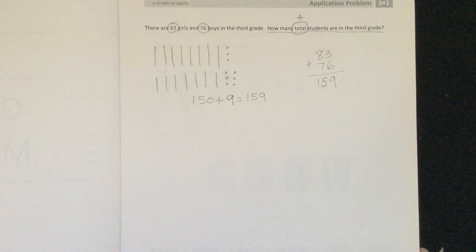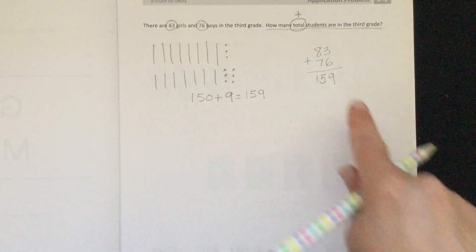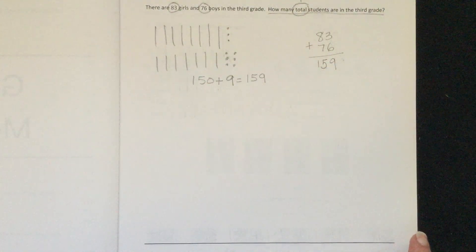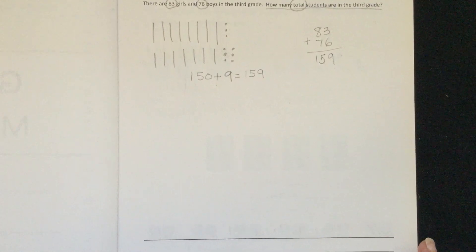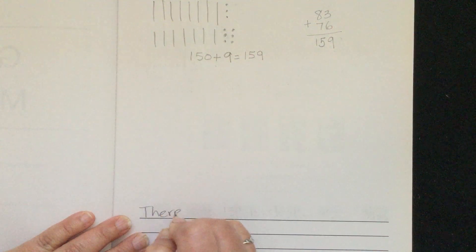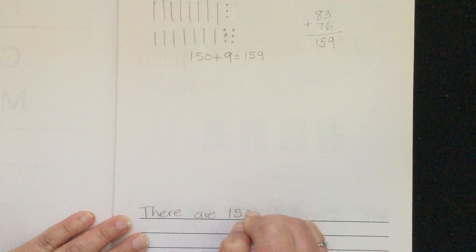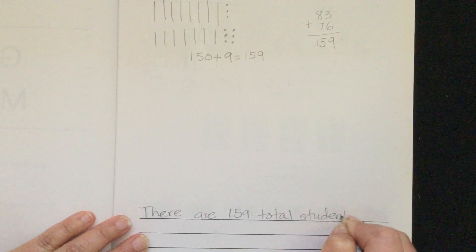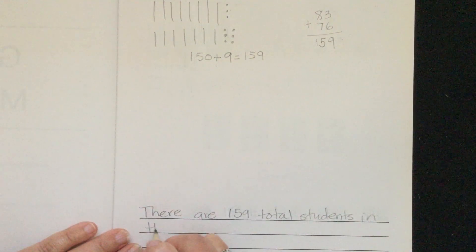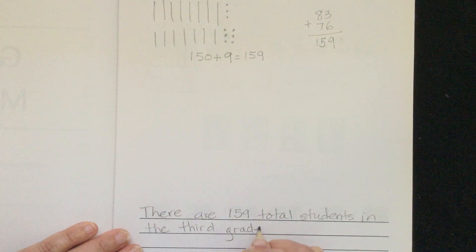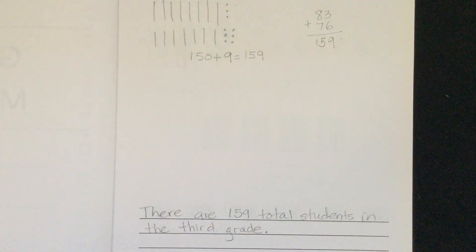We solved it two different ways, getting the same answer. Now part of our redraw, write, write is that we also need to write a sentence. We have done the writing of an equation, but now we need to answer this sentence: there are 159 total students in the third grade.